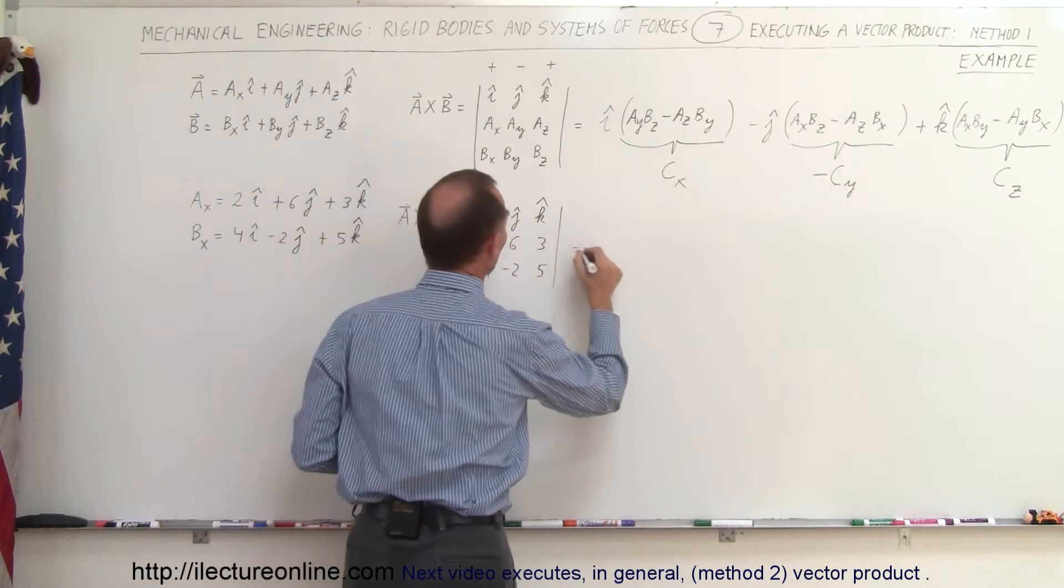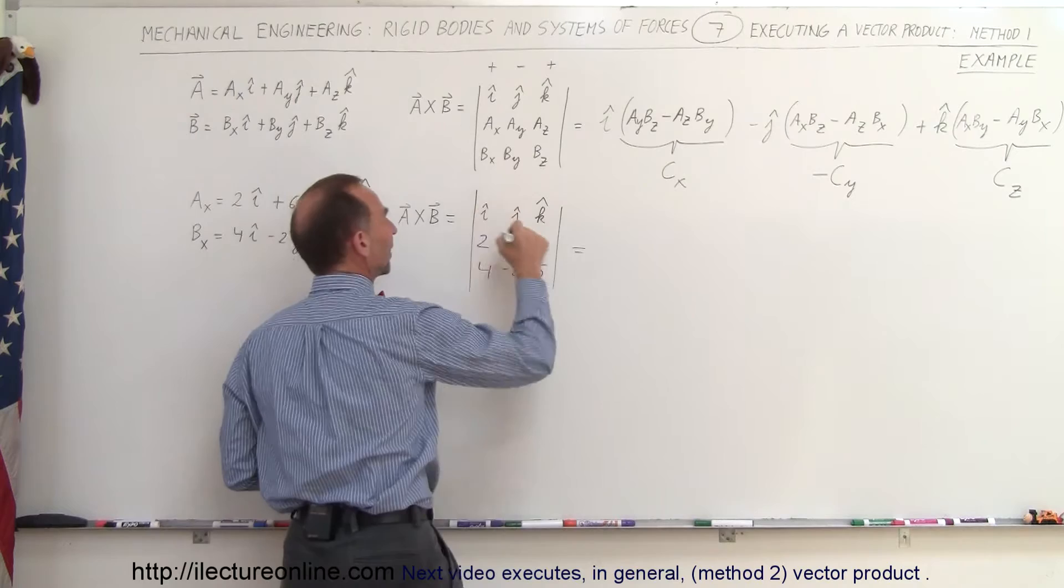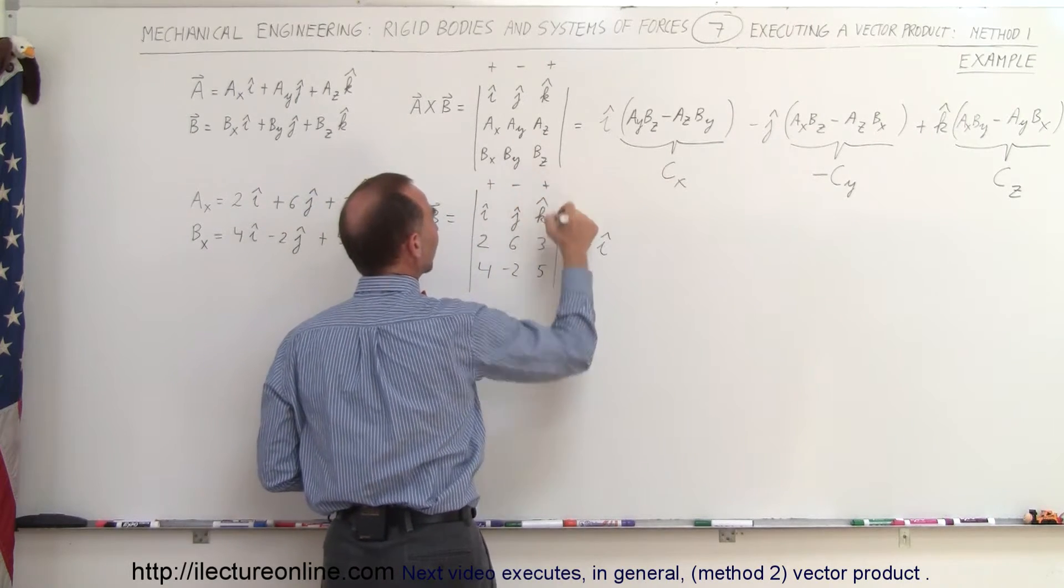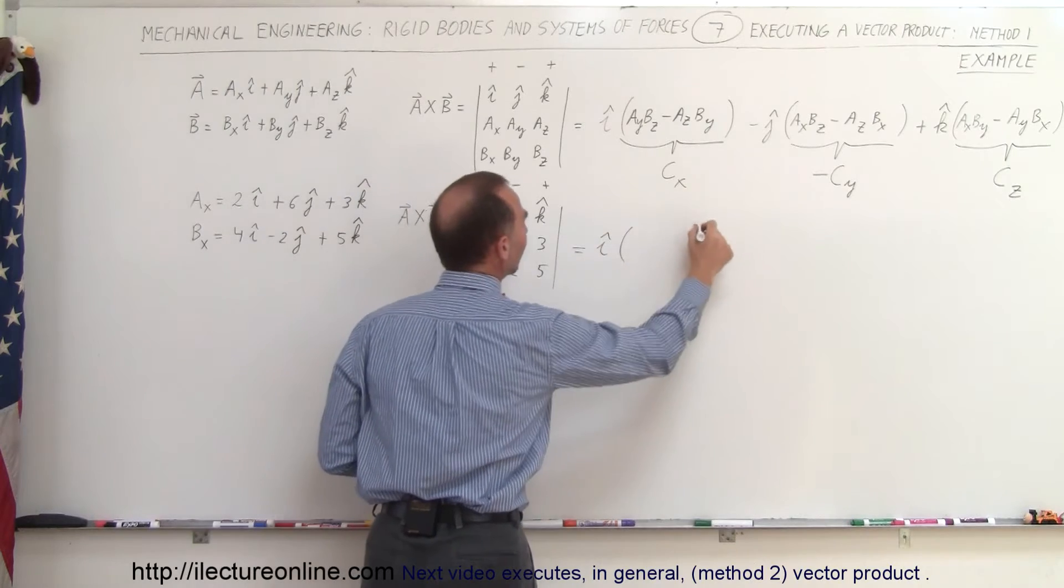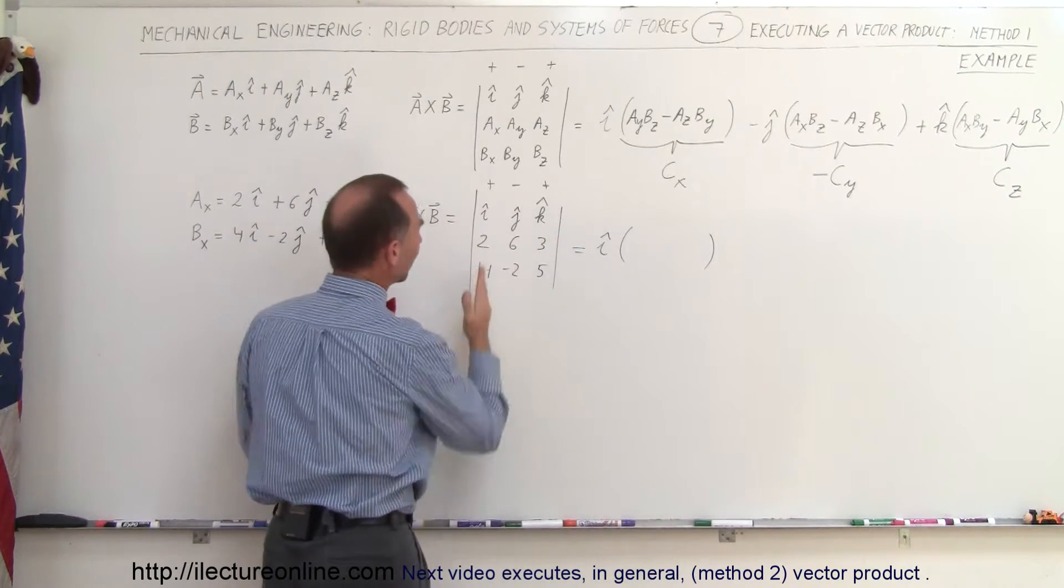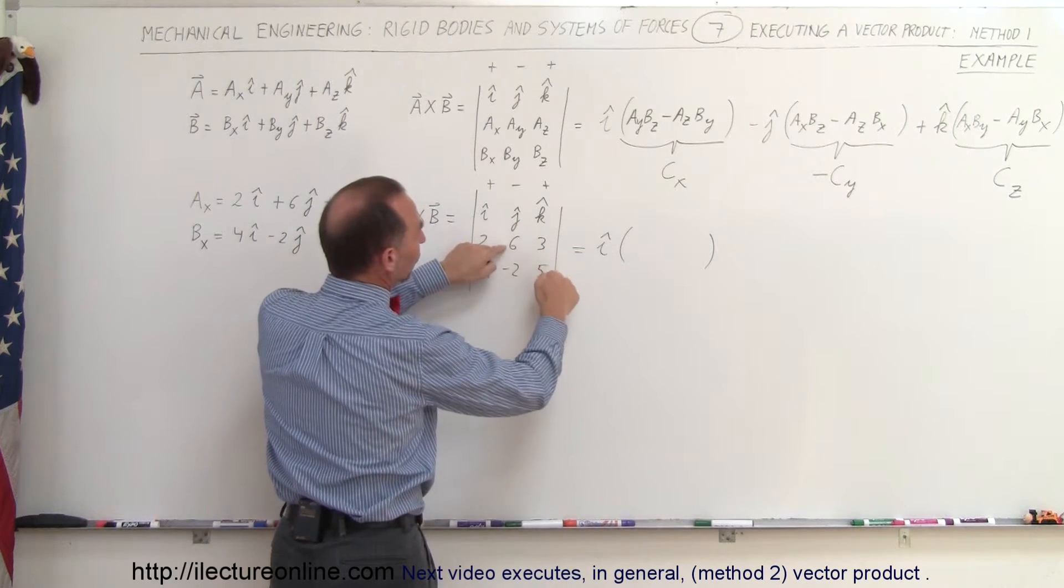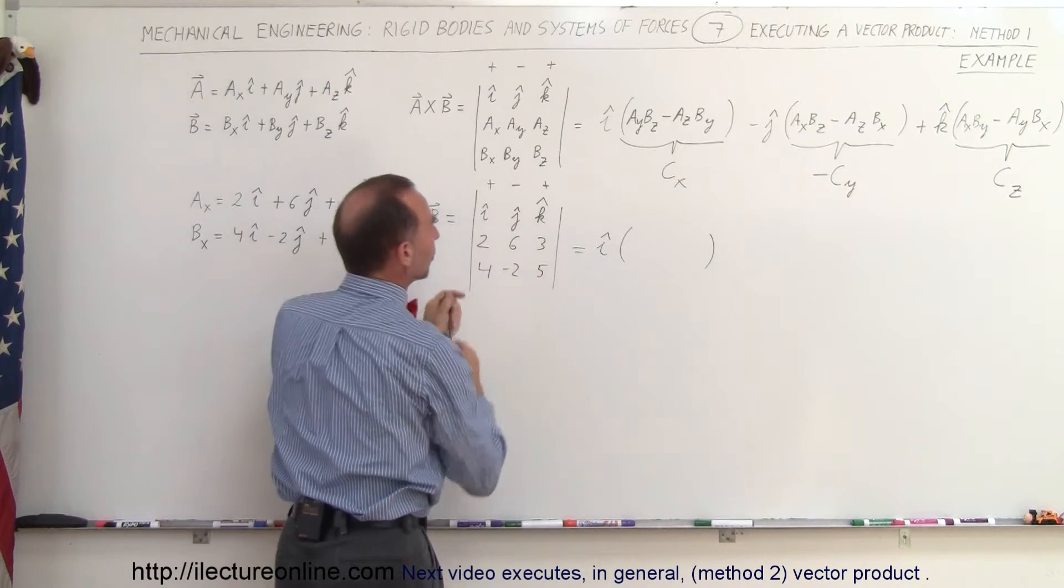So this is equal to, we take the first unit vector I, that will be positive. Remember we change signs as positive, negative, positive. So positive I times, when we picked I we're going to get rid of this column and this row. So we end up with those four elements. We multiply those two together and subtract, we multiply those two together.